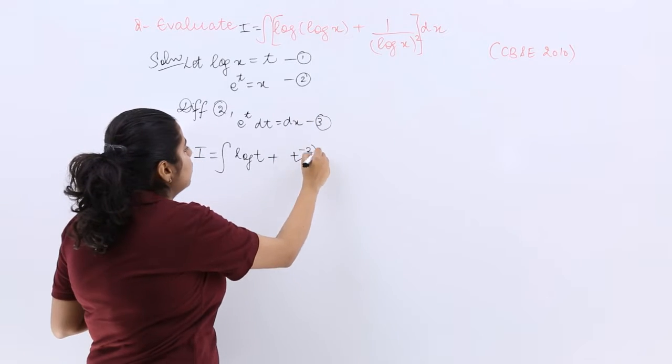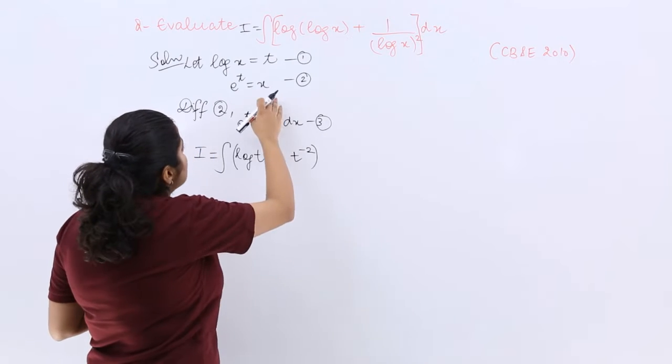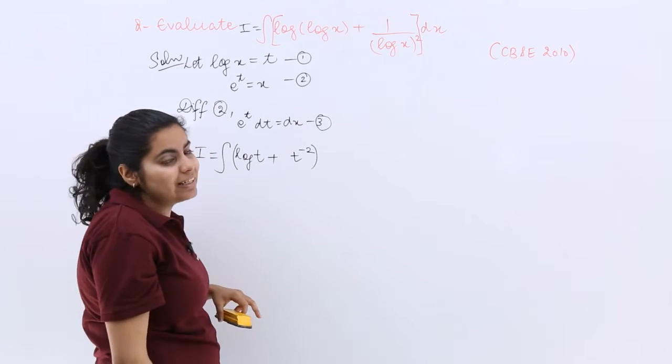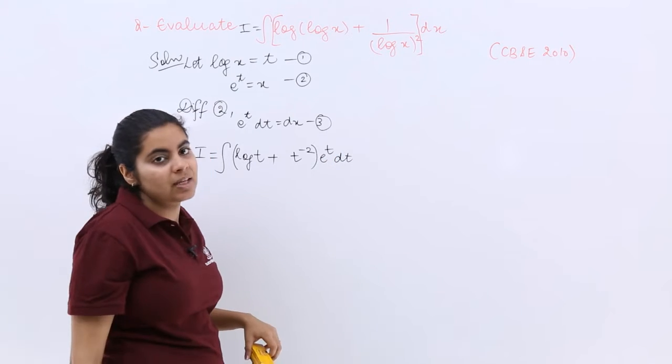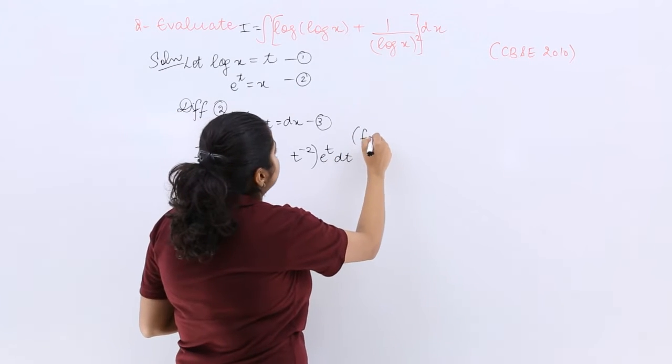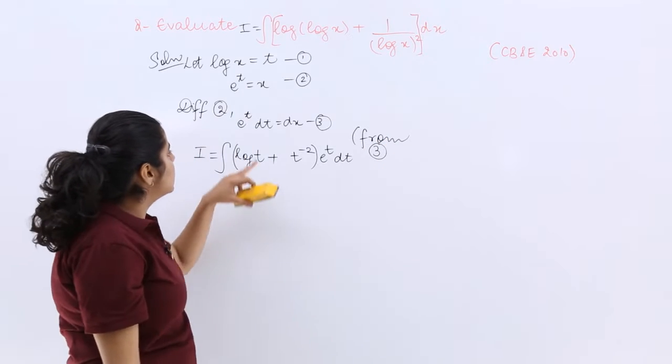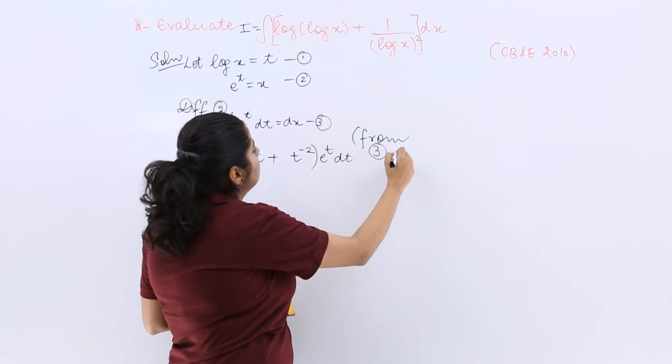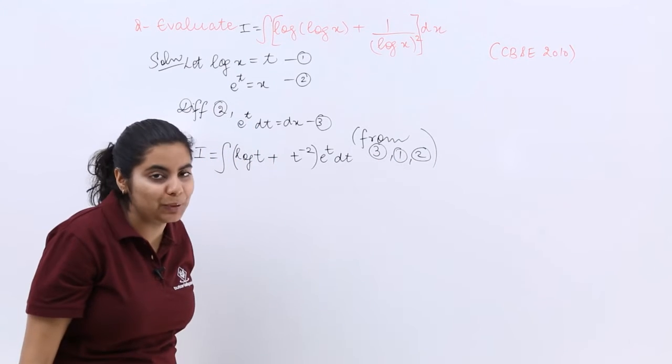Then the whole bracket would be closed and outside is your dx. Now what is dx? dx is e raised to the power t dt. So it is e raised to the power t dt. And from where is it? It is from your equation number 3 and in fact it is even from equation number 1 and 2 also. Because in short we are indirectly using all the equations.